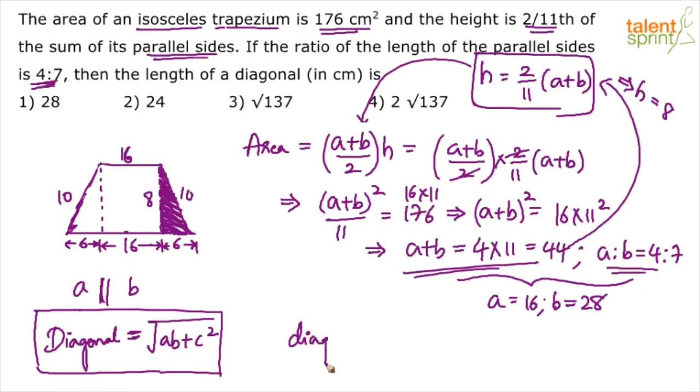So now we can see that the diagonal is equal to, the diagonal D. What is the formula? Root over, just remember the shortcut, AB plus C square. So square root of 16 into 28 plus C square is how much? 10 square. So how much is 16 into 28? It will be 480 minus 32. So 448, 448 plus 100, 548. Now 548 is 4 into 137. So it can be taken as 2 root 137. Do further simplification, you get 2 root 137.